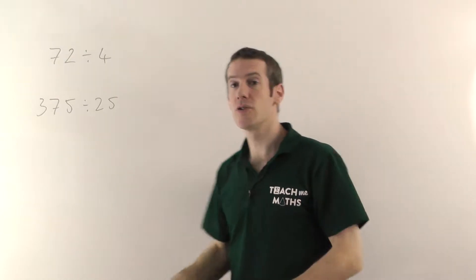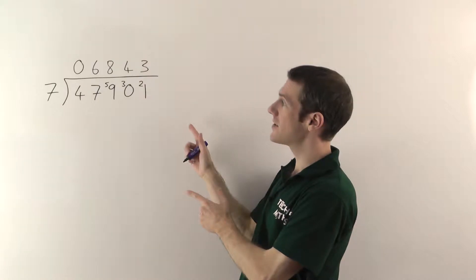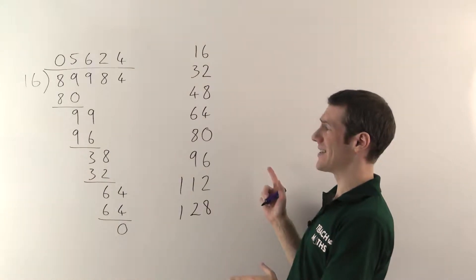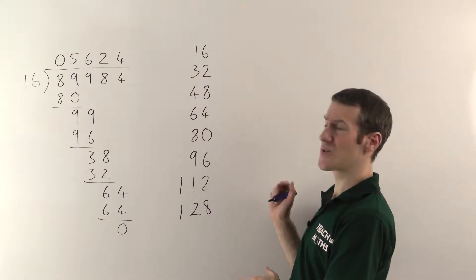Just to give you an idea what they look like, short division tends to look like that, whereas long division, well actually there's two types that I'm going to show you in the long division video. There's the traditional long division method, which tends to look like that. Yes, there's quite a lot of it really.